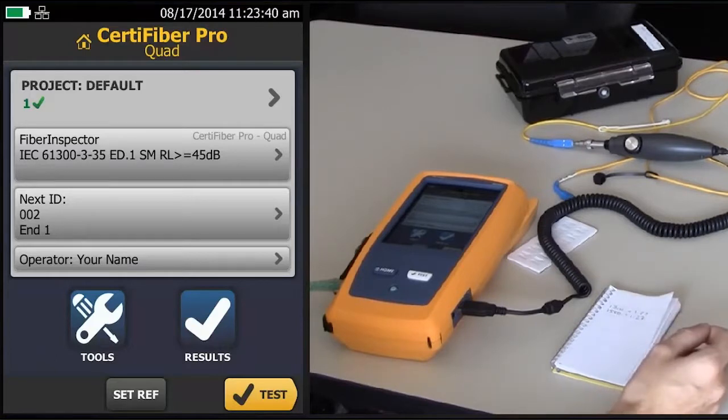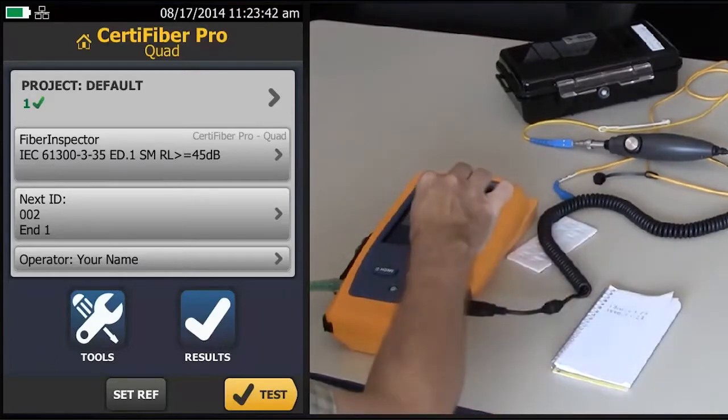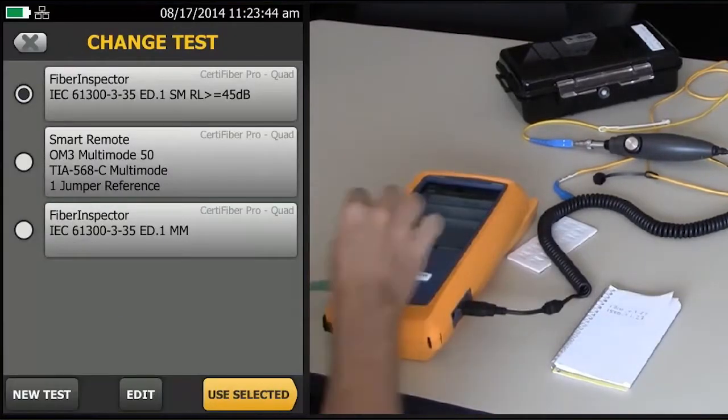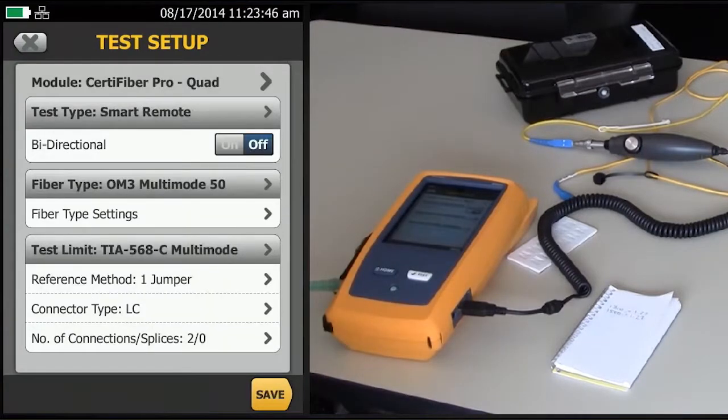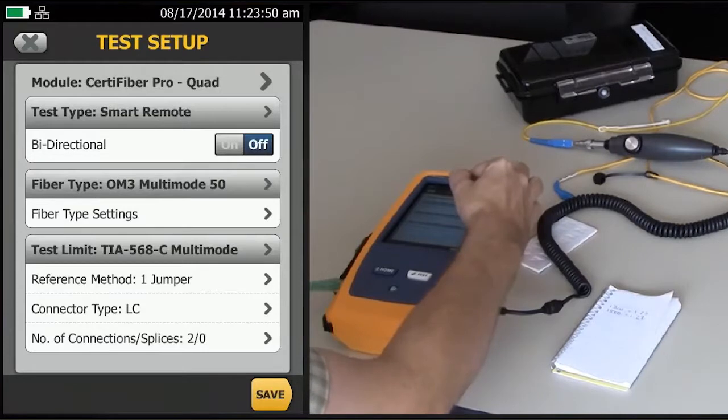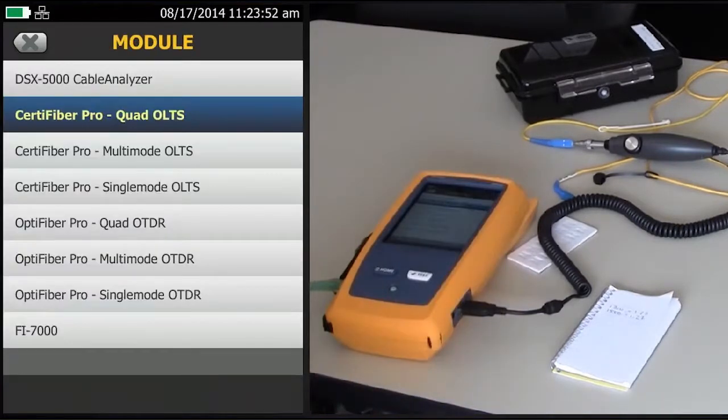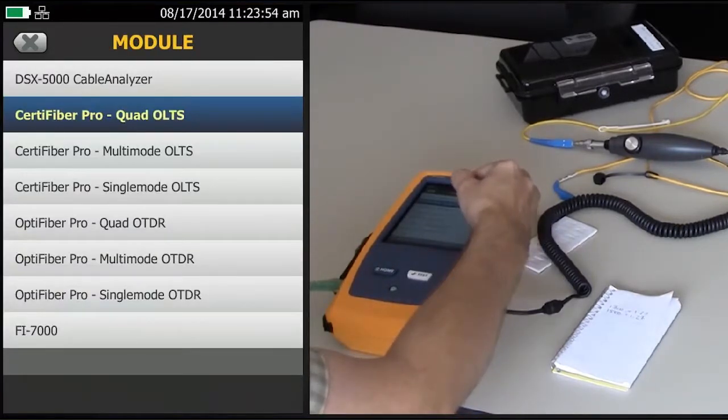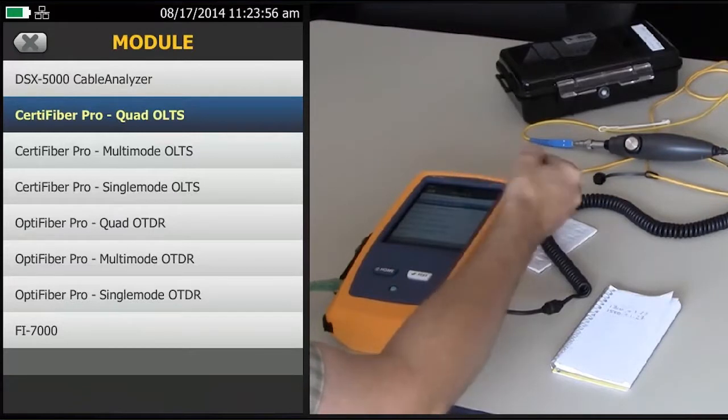To do that, we need to change the test limit. So we'll tap the test limit here, New Test. Make sure the module type says CertiFiber Pro. If it doesn't, tap Module and change it to the CertiFiber Pro module that you're using. We're using a quad here.